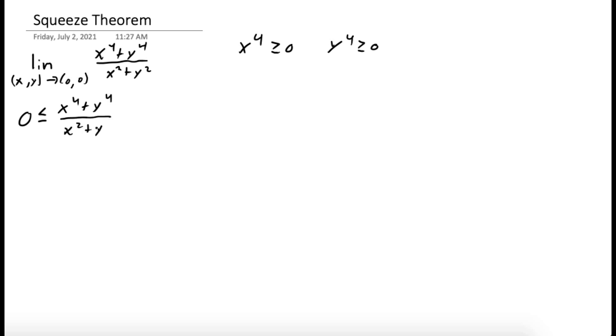But now the challenge is we need to find an upper bound whose limit is easy to evaluate and hopefully that limit will be 0. So x to the fourth plus y to the fourth, well that looks a lot like x squared plus y squared squared, right? X to the fourth plus y to the fourth is less than or equal to x to the fourth plus 2 x squared y squared plus y to the fourth, because x squared and y squared are both non-negative. And that right hand side is equal to x squared plus y squared all squared.